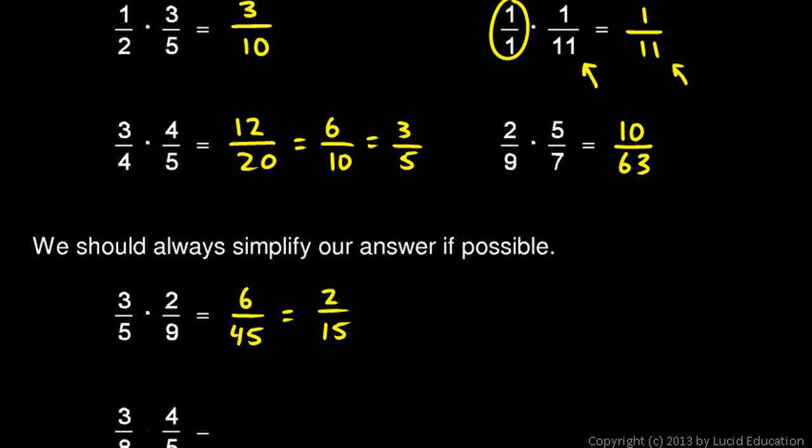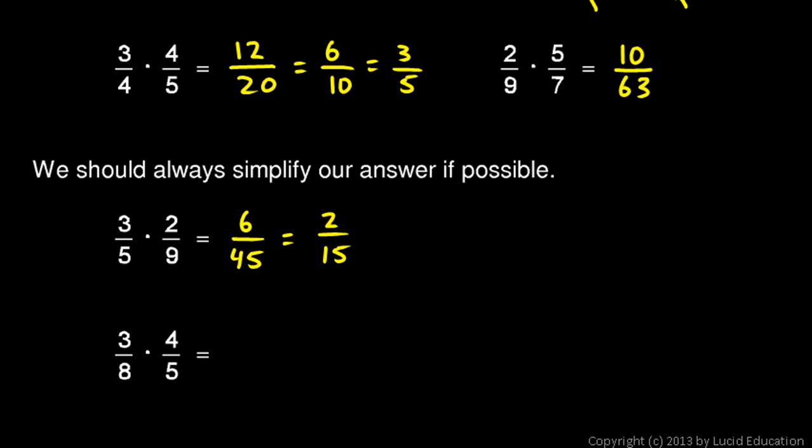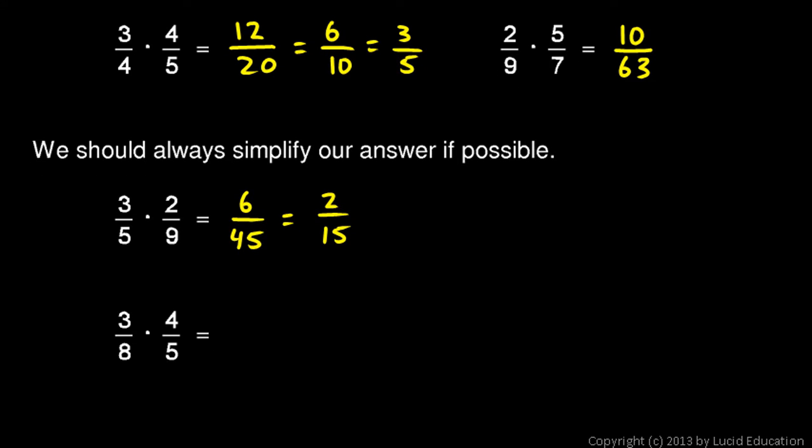And then one more similar to that. 3 eighths times 4 fifths. 3 times 4 is 12. And 8 times 5 is 40. And those are both even numbers. Divide them both by 2. And we get 6 over 20. And divide them by 2 again. And we get 3 over 10. So 3 tenths is the answer.